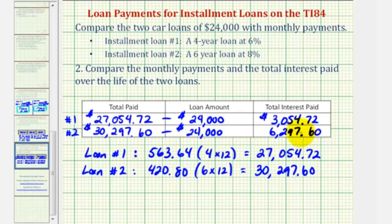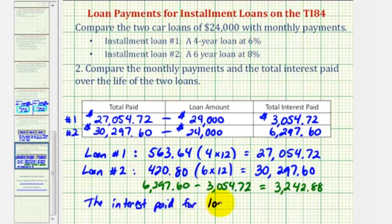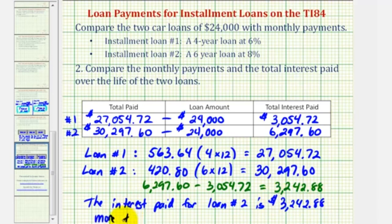Finding the difference between the two interest amounts: $6,297.60 minus $3,054.72 equals $3,242.88. So the interest paid for loan two is $3,242.88 more than the interest paid for loan one.